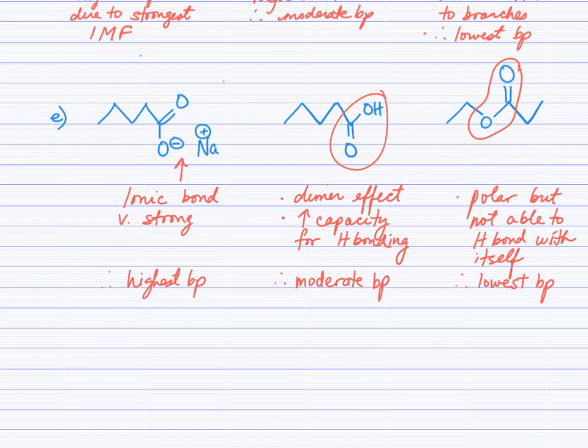Let's check the other two structures. I've circled the functional group here, and you may recall that this functional group experiences the dimer effect, which is an increased capacity for hydrogen bonding, which is going to raise the boiling point. Will it raise it higher than the ionic attraction? No. We'll always classify the ionic attraction to be stronger than even the dimer effect here.